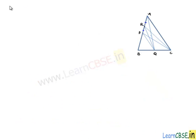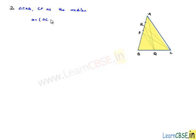Now in triangle CAP, consider CP as a median. Since P is the midpoint of AB, CP divides triangle CAP into two equal halves in area. That is, area of triangle CAP equals area of triangle BPC. Let this be equation number 2.